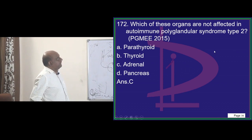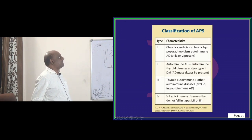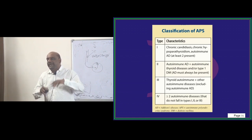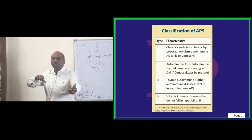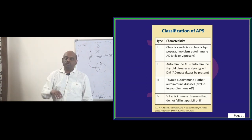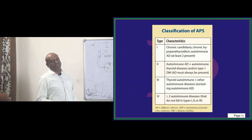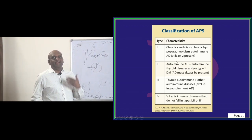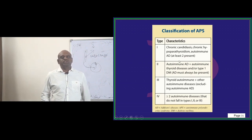So parathyroid, thyroid, pancreas - they are all affected in autoimmune polyglandular syndrome. Pheo, autoimmune polyglandular syndrome - favorite area of the examiner. Type 1: chronic candidiasis, chronic hypoparathyroidism presenting with hypocalcemia, and autoimmune Addison's disease. At least 2 things should be present in this.